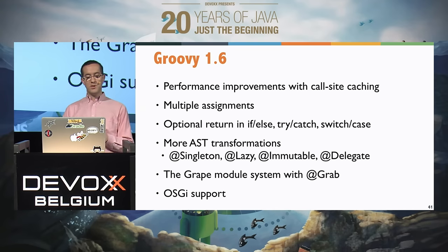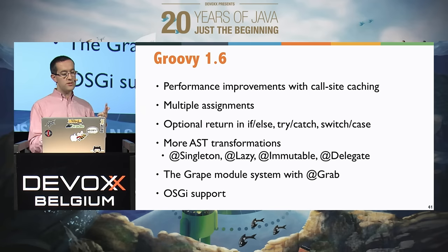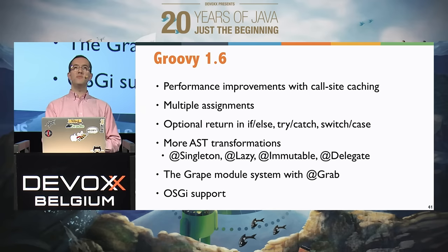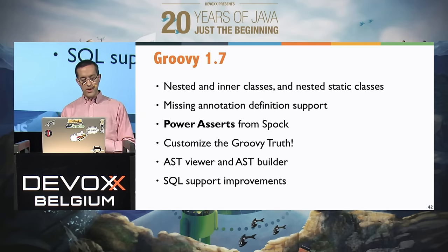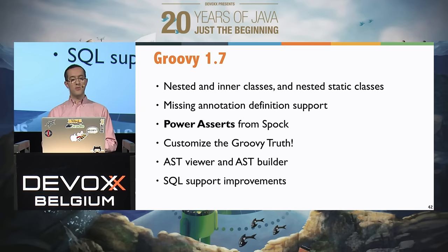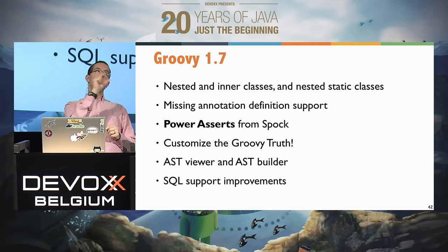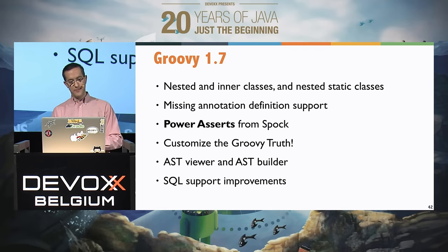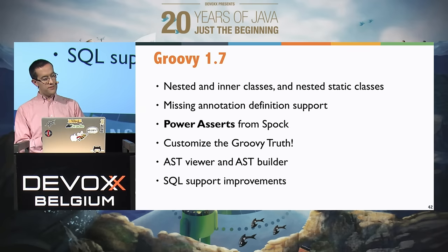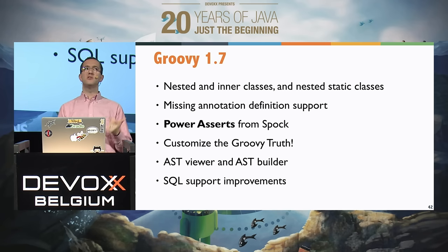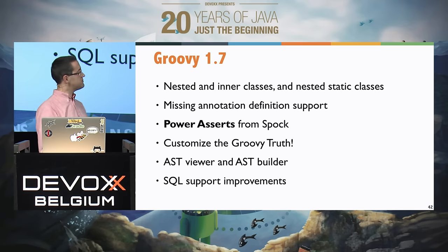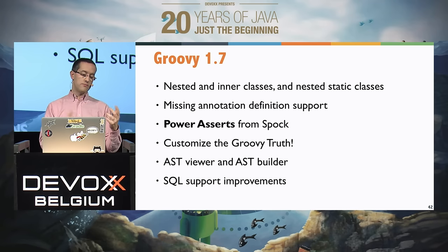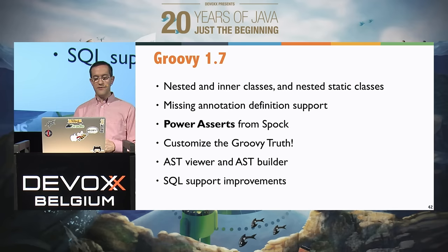Groovy 1.6 brought much better performance, multiple assignments, and more optional returns — that's where AST transformations became popular, along with the Grape system for getting dependencies easily with a simple annotation. Then Groovy 1.7 borrowed power asserts from the Spock framework, which let you see all the values of sub-expressions in the expression you're asserting. We also added customizing the Groovy truth and tooling to help developers author AST transformations with the AST Viewer and AST Builder.